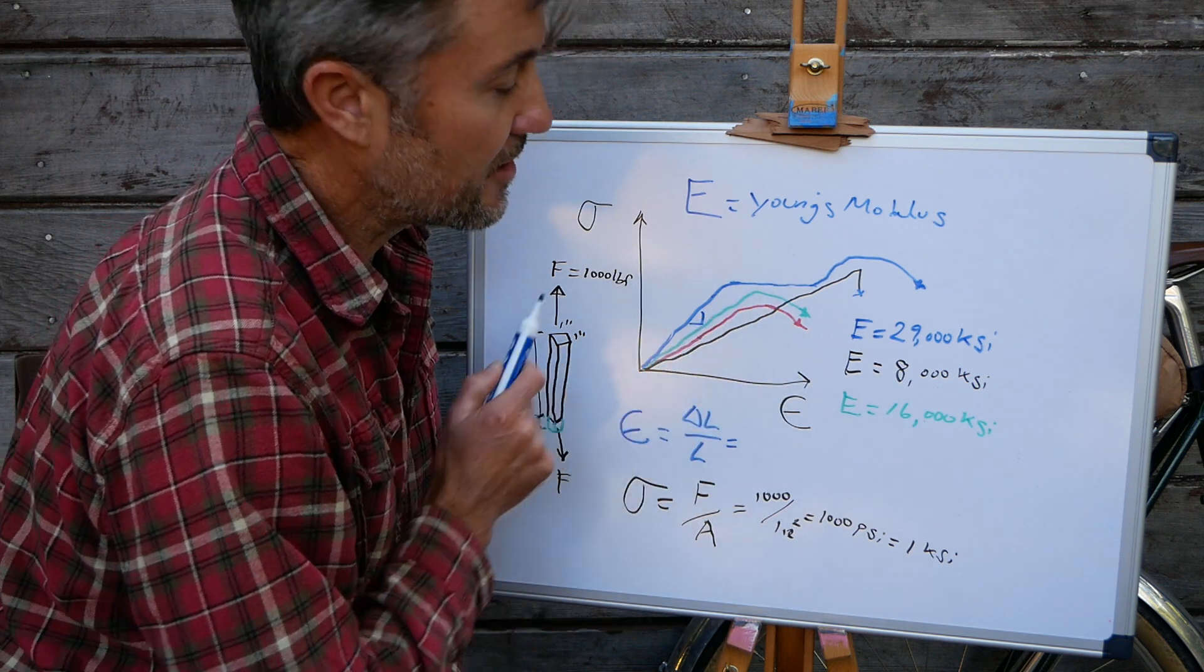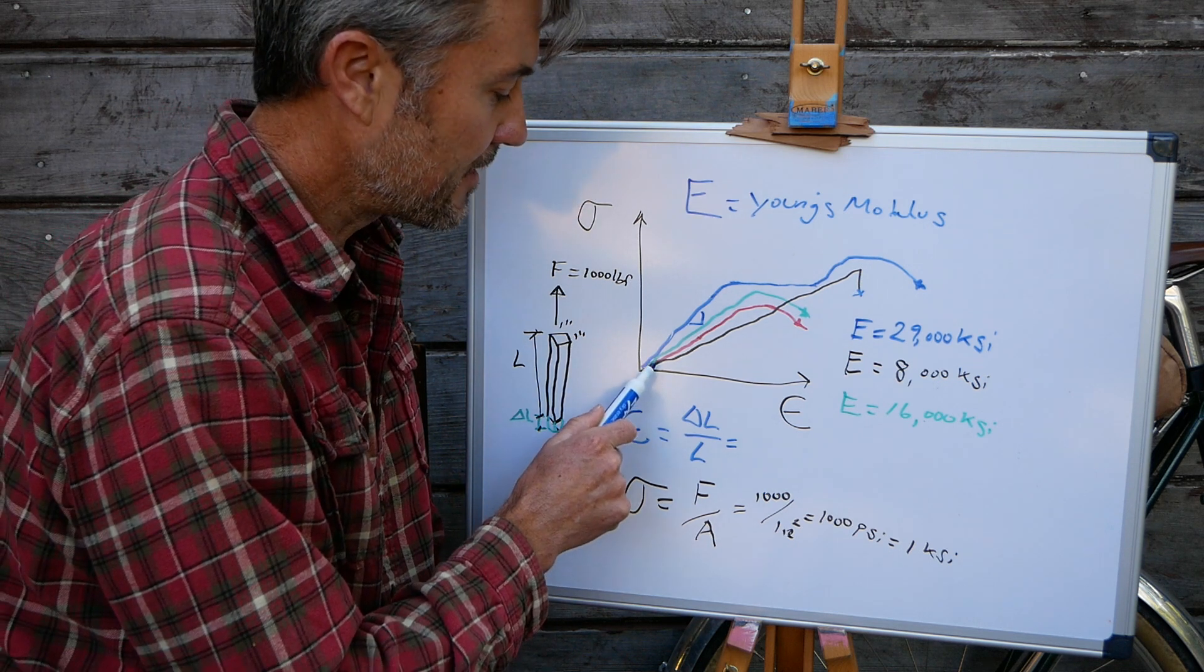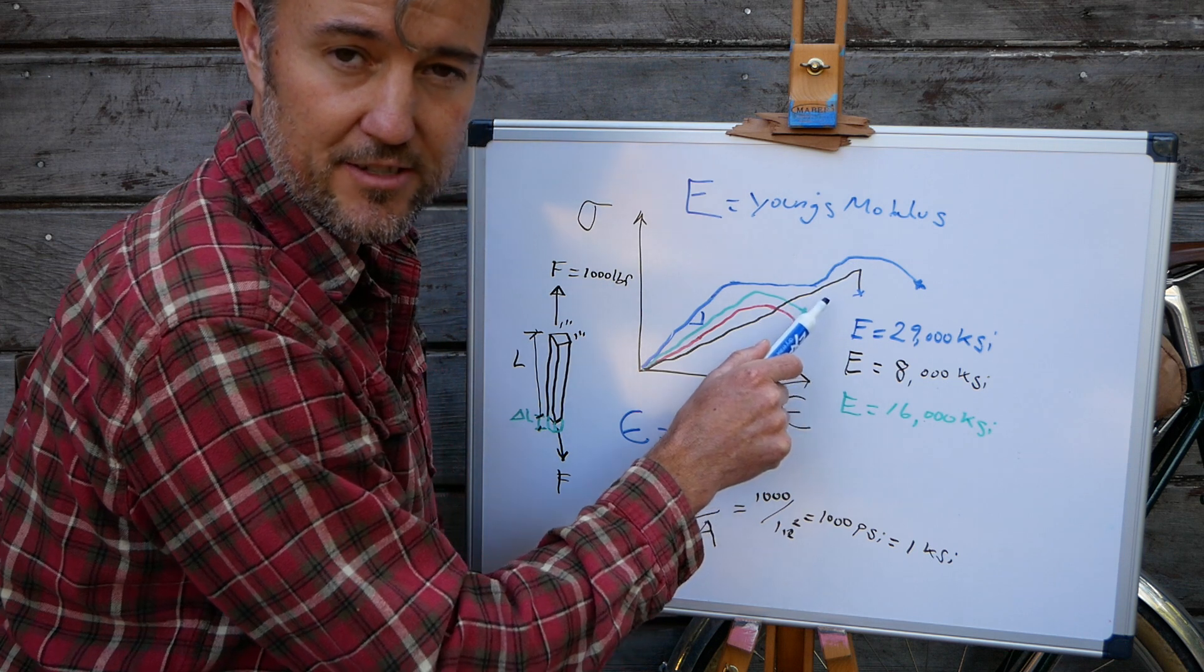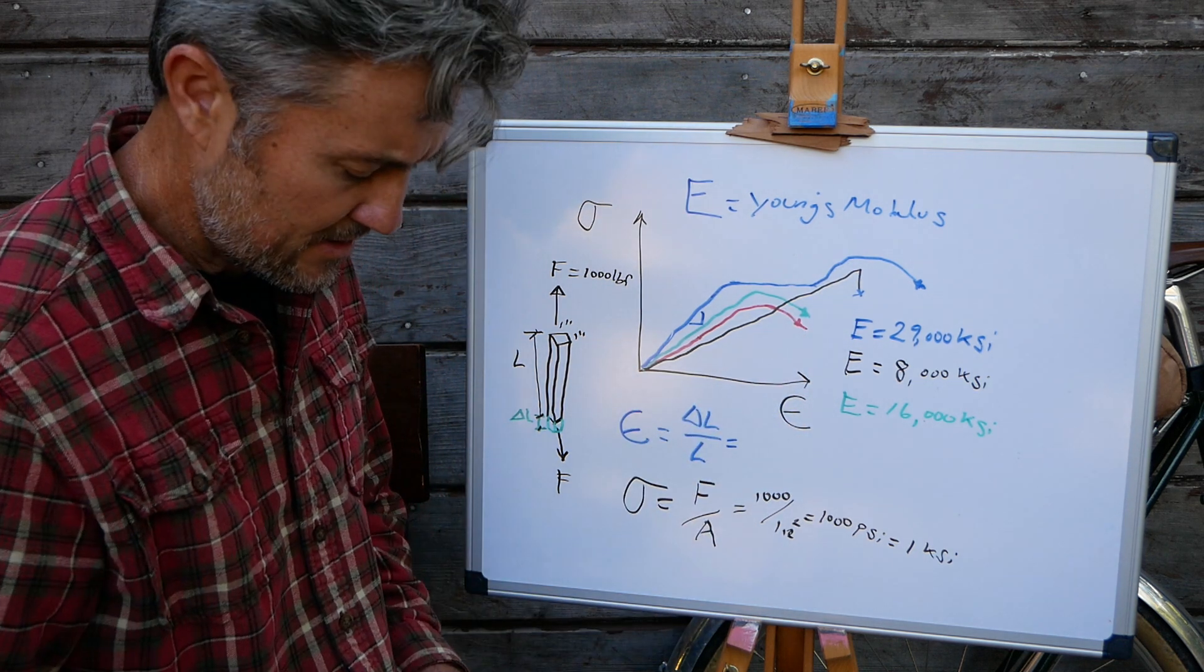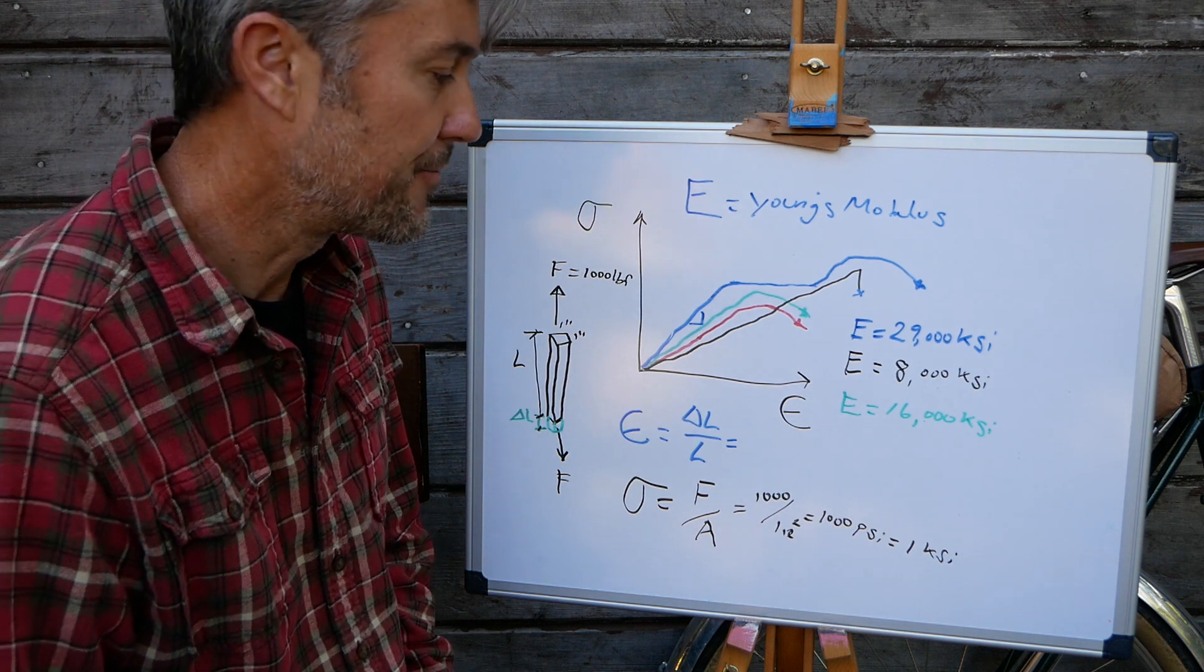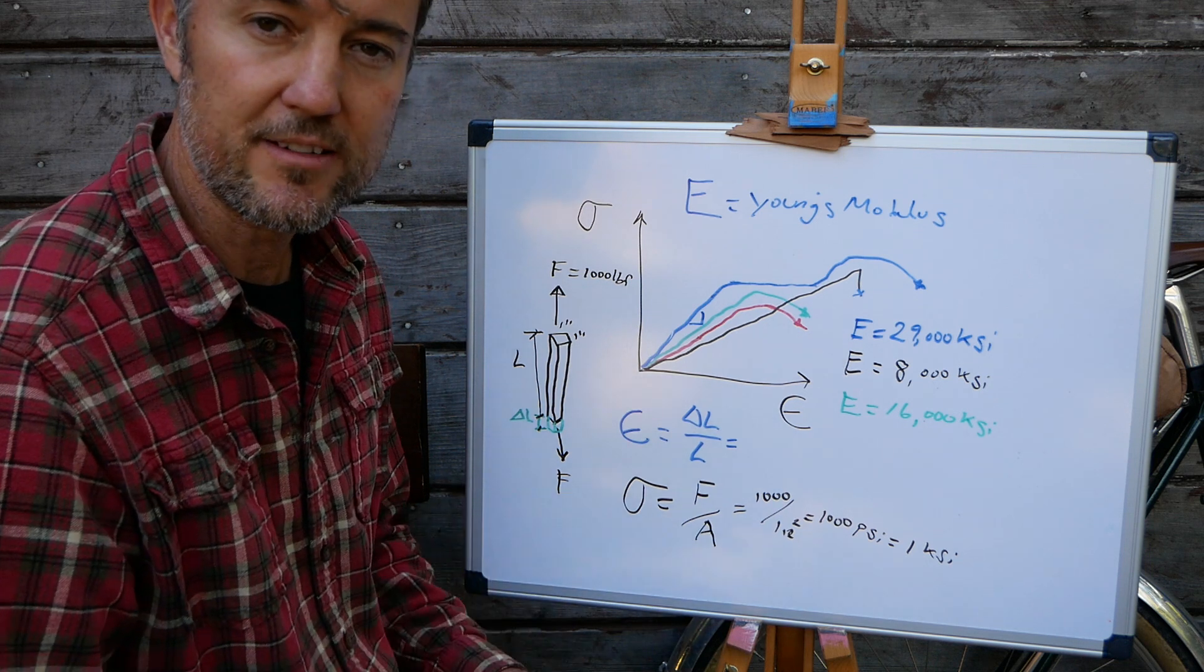But then let's look at carbon fiber. That one's very unique. This one is linear elastic all the way up until it fails. So it does not yield. That's one of the differences between carbon and steel is that carbon does not yield, it just suddenly breaks.